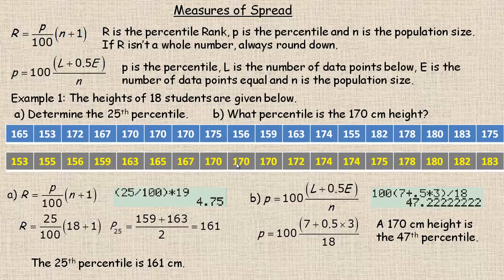Notice that the 170s are in the middle of the data set, so we would assume the 170s should be around the median — around the 50th percentile. After doing these two calculations I decided to check them using a different method.